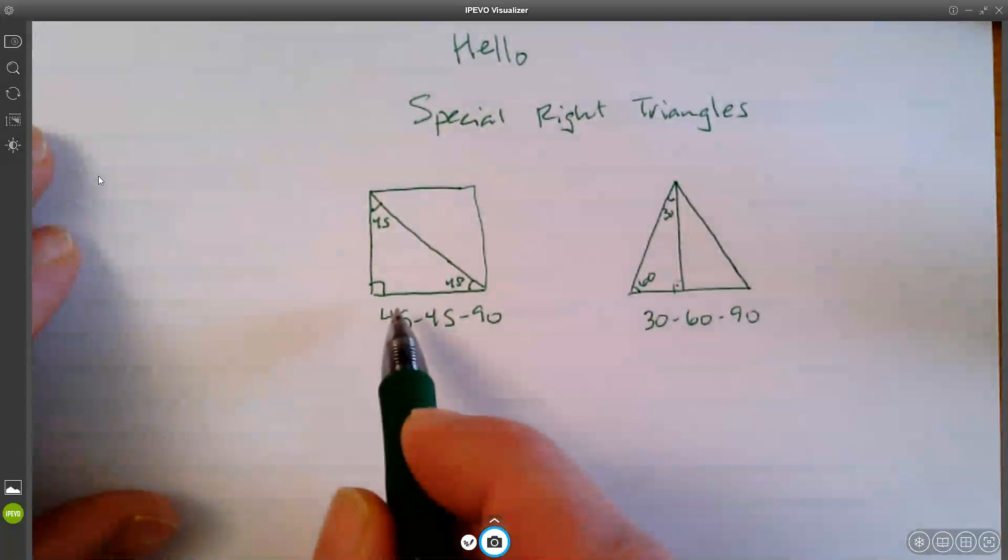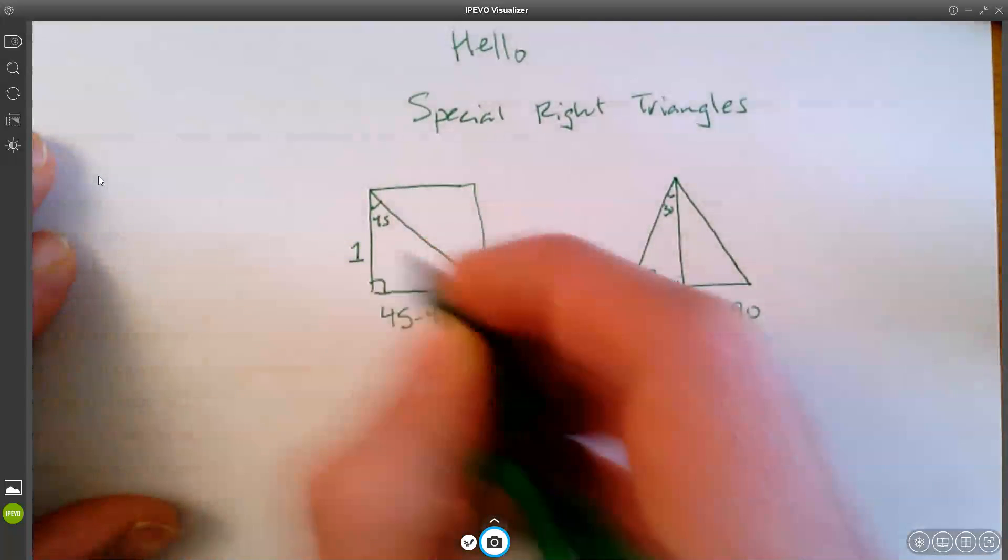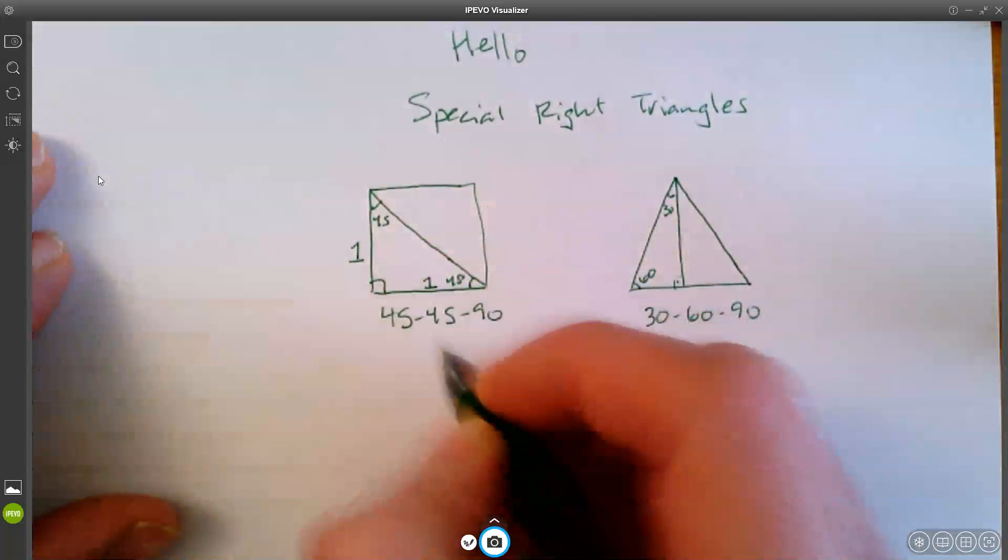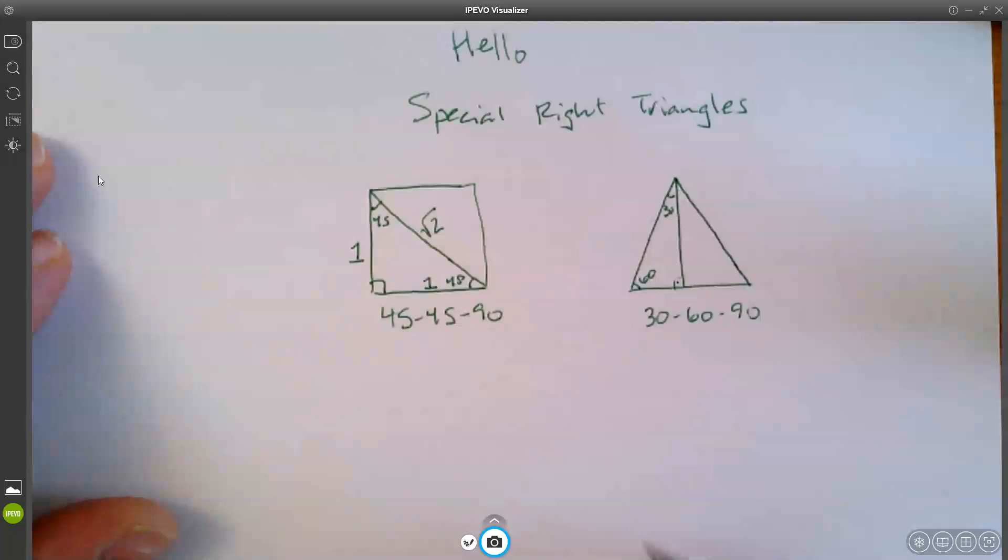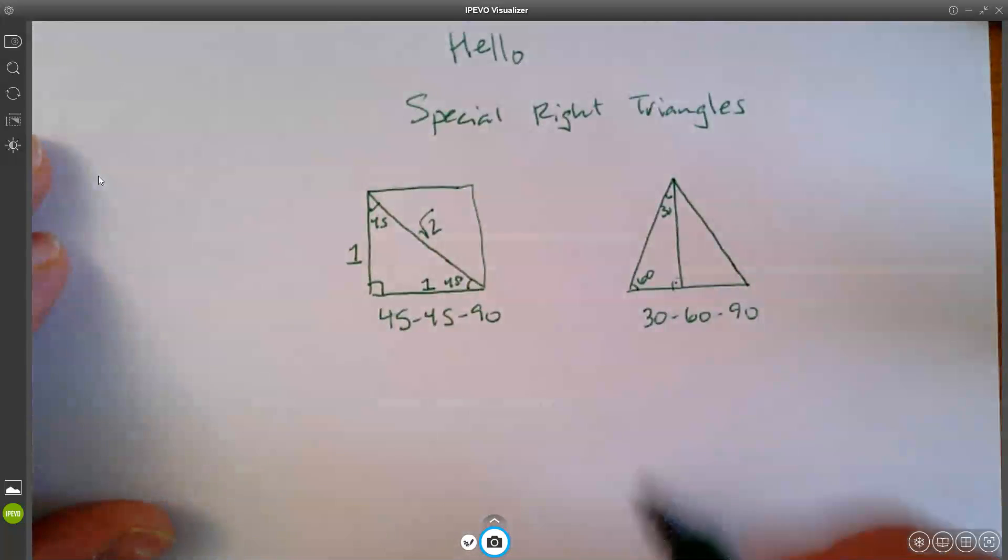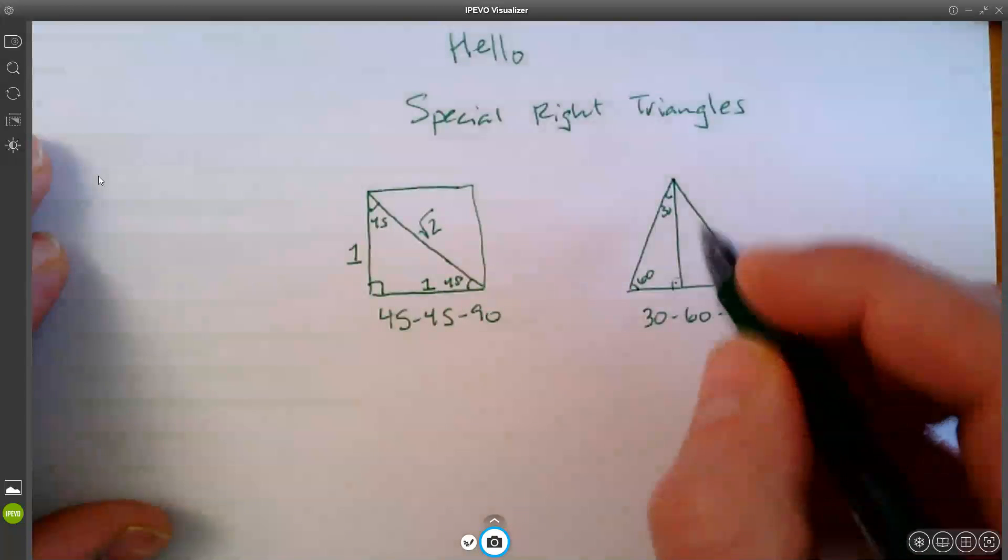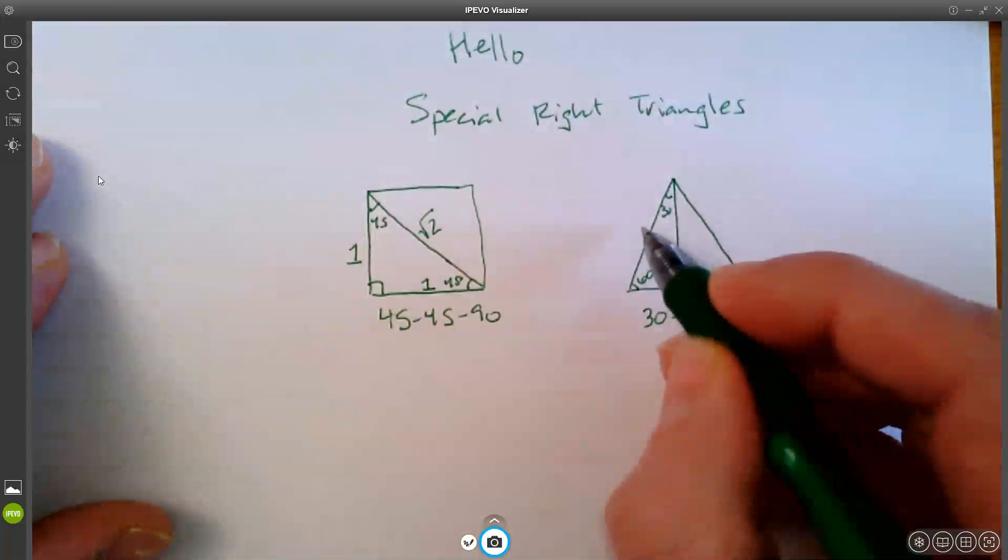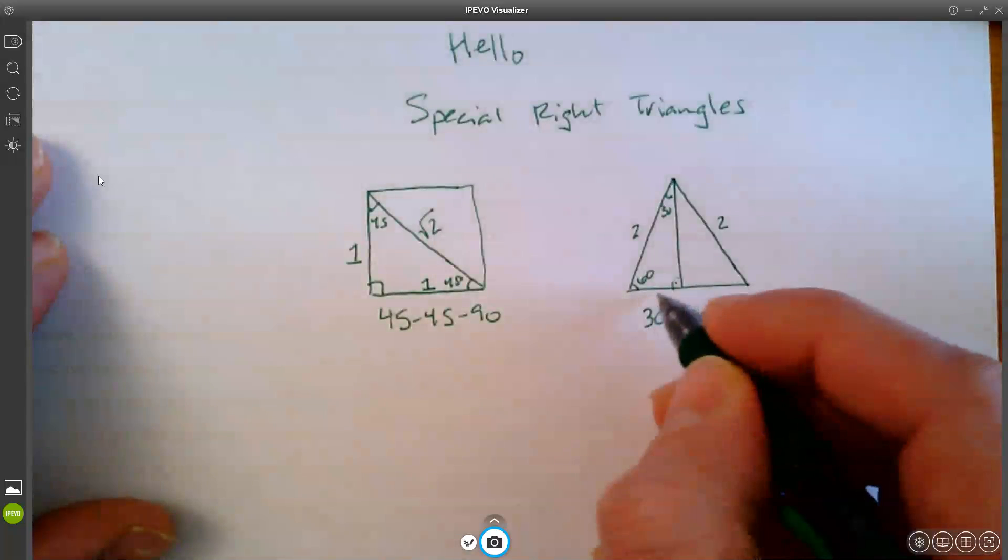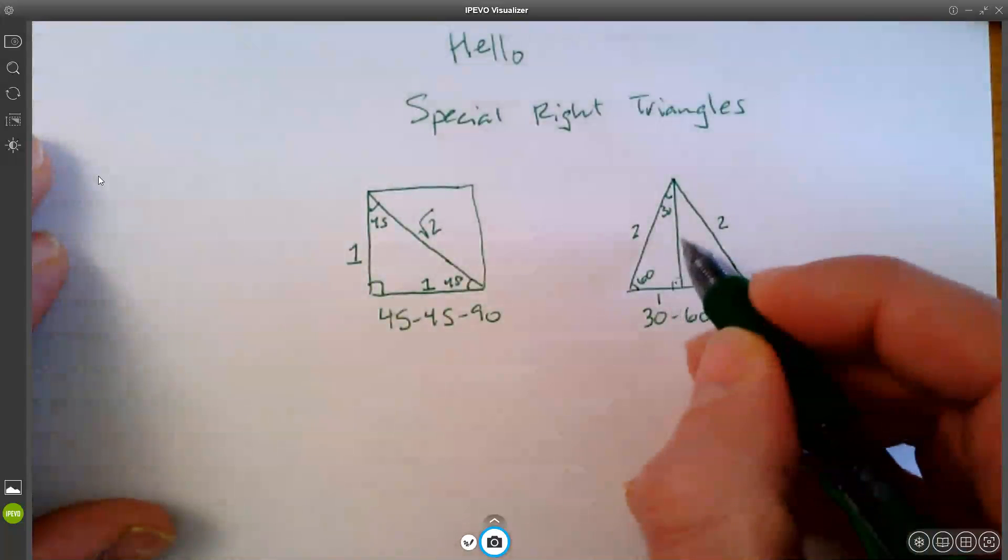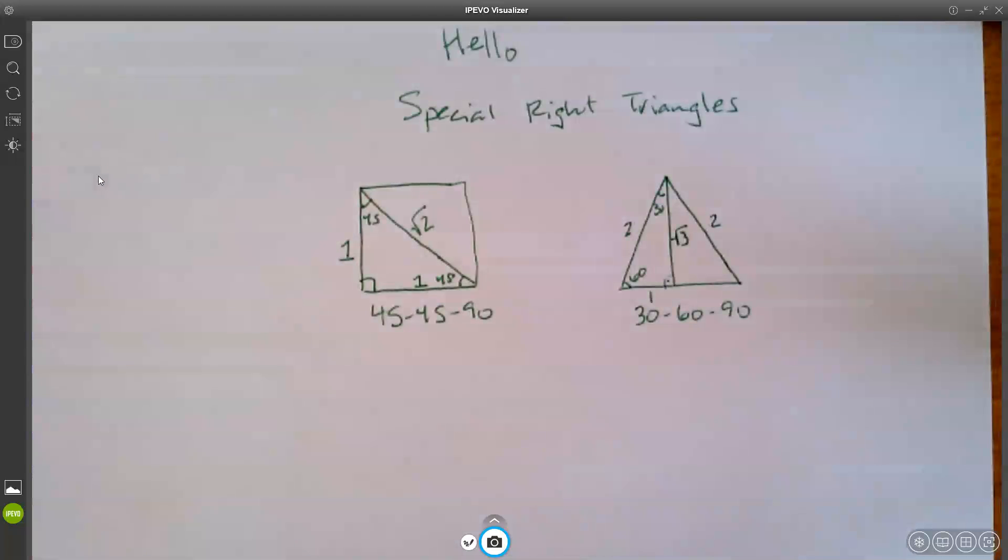Now, on the square, I usually like to imagine that the side lengths are 1 and 1 here, which using Pythagorean theorem gives us square root of 2 over here. And I usually like to imagine that on this one, the outside side lengths of the original equilateral triangle are 2 and 2 over here. And this would be 2 all the way across the bottom so it's a 1 here. And using Pythagorean theorem we get square root of 3 over here.